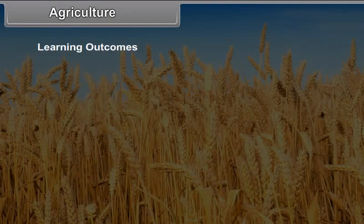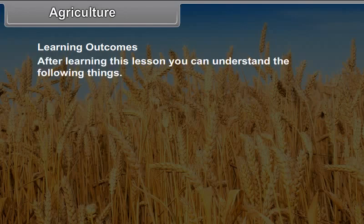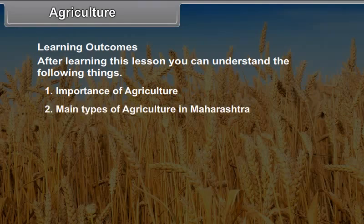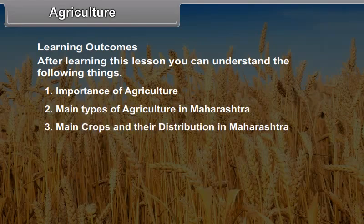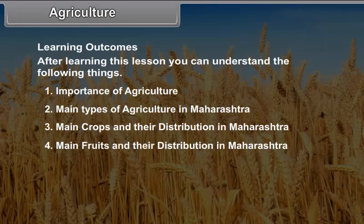Learning Outcomes: After learning this lesson, you can understand the following things — Number 1, Importance of agriculture; Number 2, Main types of agriculture in Maharashtra; Number 3, Main crops and their distribution in Maharashtra; Number 4, Main fruits and their distribution in Maharashtra; Number 5, By observing maps, you will get information about the distribution of the produce.